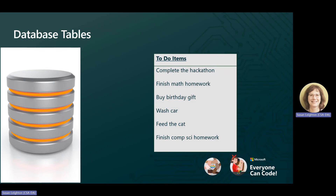Here is an example of a very simple database with a single table. This is like how you started the current app in building a to-do list. It is very basic, containing only the actual items to do. It does not contain other items which might be important, like due dates, how much time each item will require, whether any items are dependent upon any others, and multi-user capability. But even so, it is a table containing multiple records.